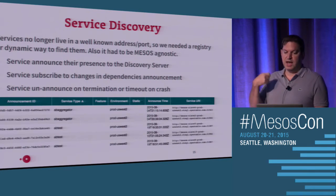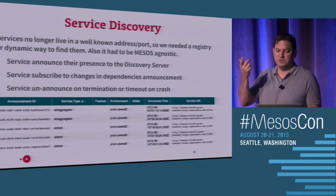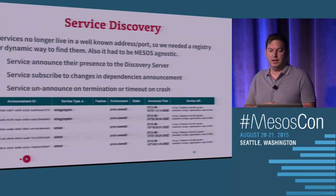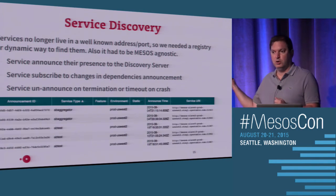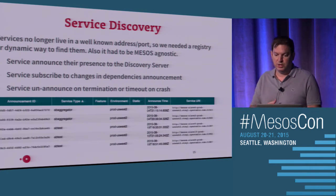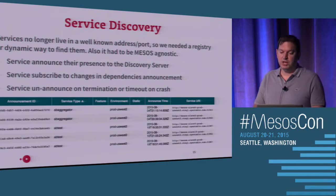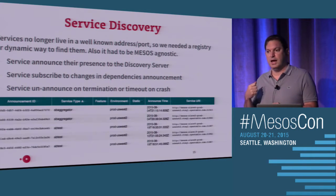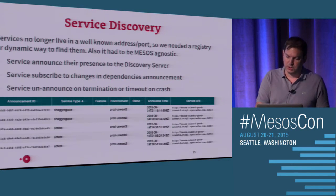Normally, a service announces its presence: as soon as you boot up, you announce to the service discovery server that you exist somewhere. Then you can subscribe to changes — if you have dependencies you need to call, you subscribe, and if they change location in the network, your routing table is automatically updated. When you terminate or crash, you unannounce, and the table gets pruned.